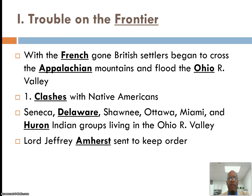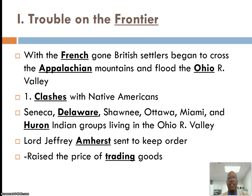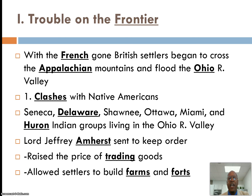This was the group that helped support the French during the French and Indian War. Lord Amherst, as leader of the British Army from the French and Indian War, was sent to keep order. They were setting up trading posts, and Lord Amherst was instituting new taxes on these trading posts, so prices were going up. Settlers were also building farms and forts, though the British were directing how this took place.